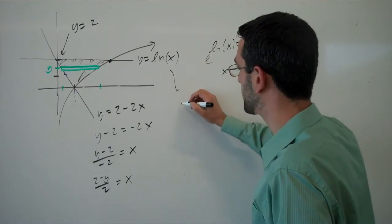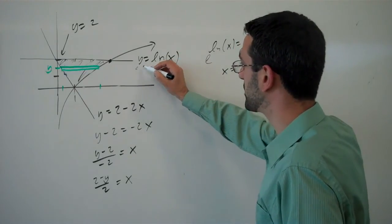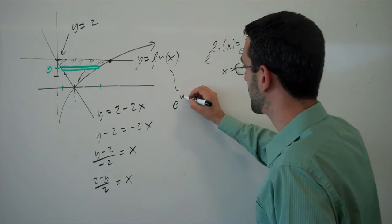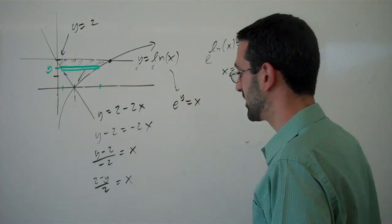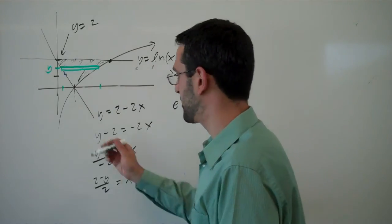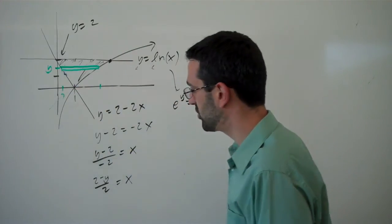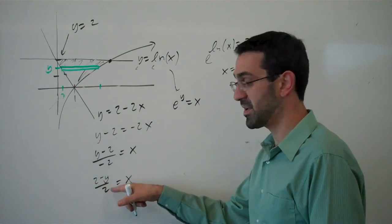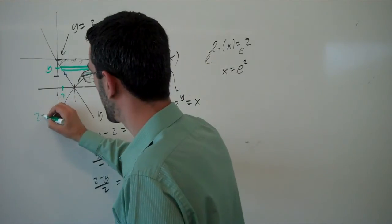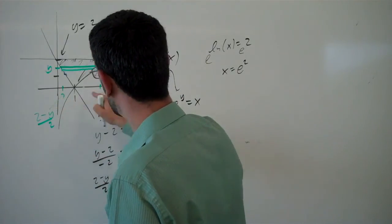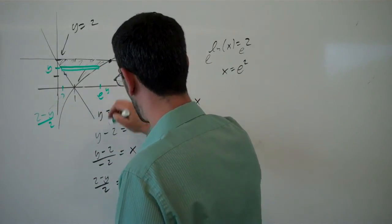Here, we need to solve this for x. Exponentiating both sides, we get e to the y equals x. Okay? So this x value is 2 minus y over 2. And this x value is e to the y.